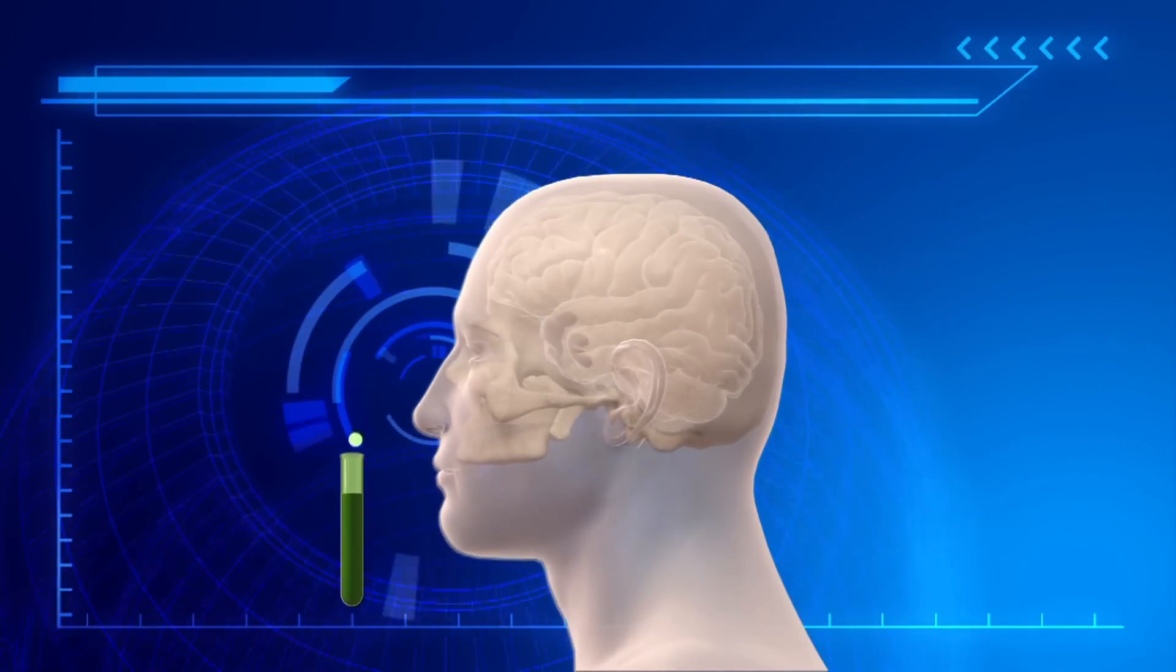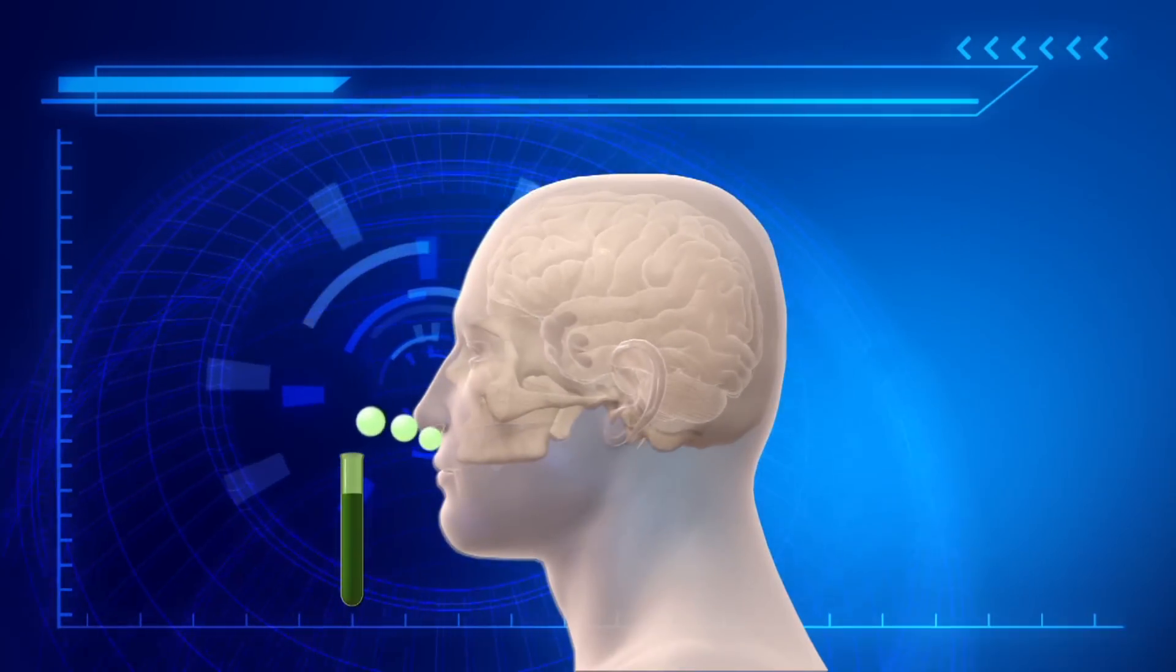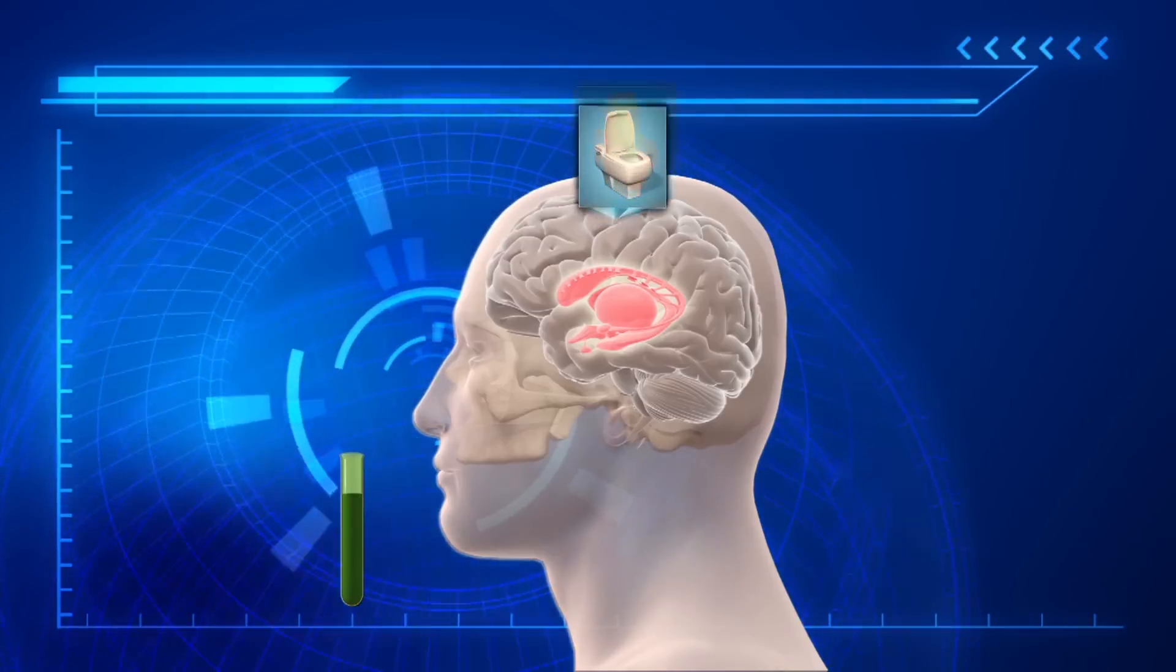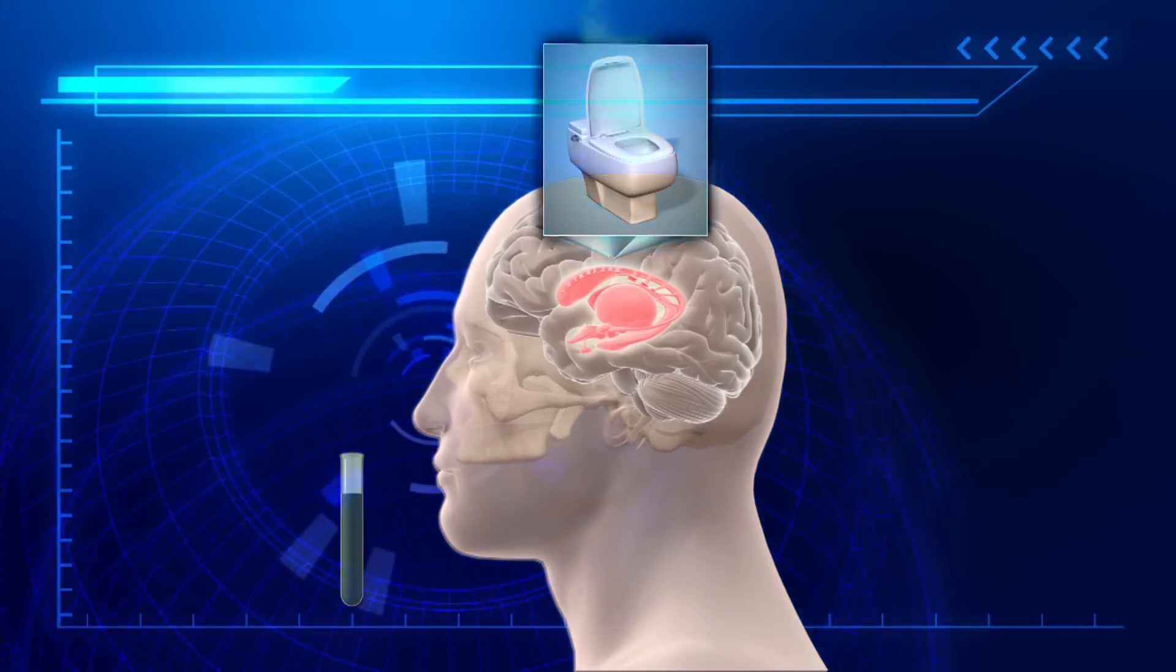Once an odor molecule binds to a receptor, it sends an electrical signal to the limbic system of the brain via the olfactory bulb, triggering the brain to identify and register the smell.